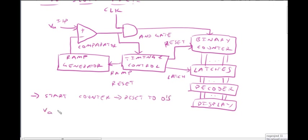So, VA is greater than the Ramp Generator output. The ramp signal output is fed into the Comparator.